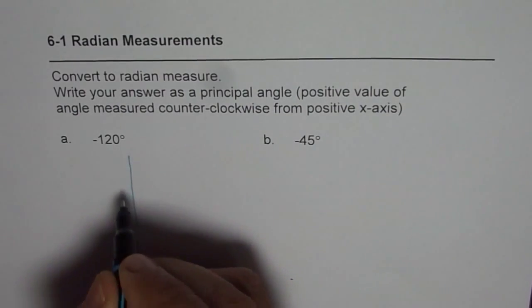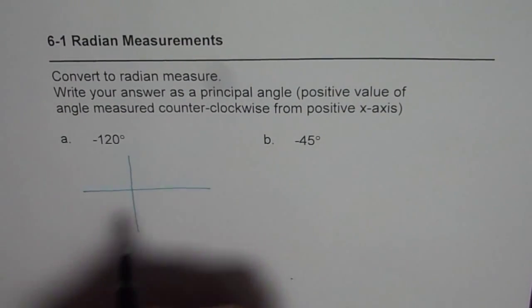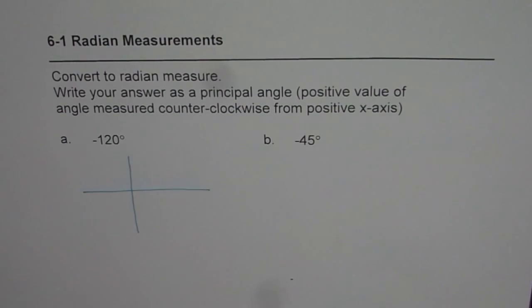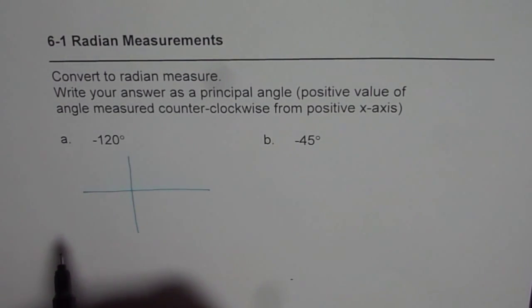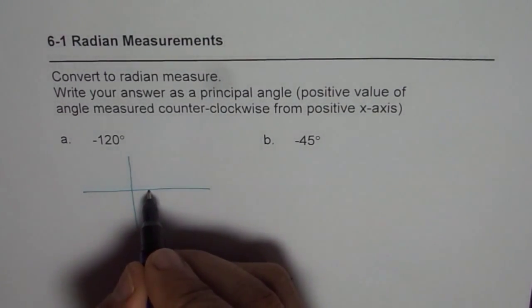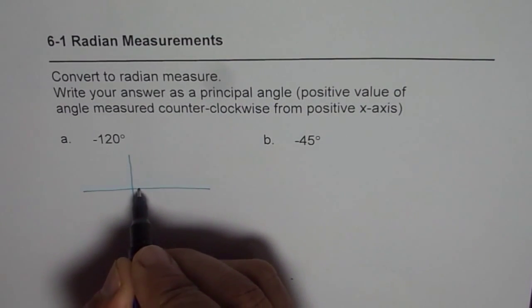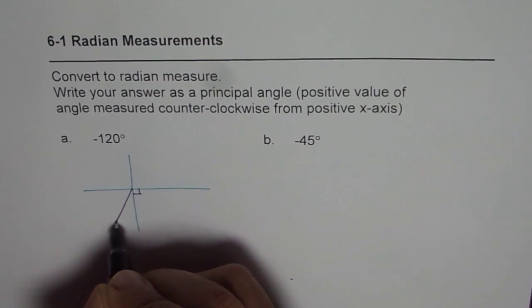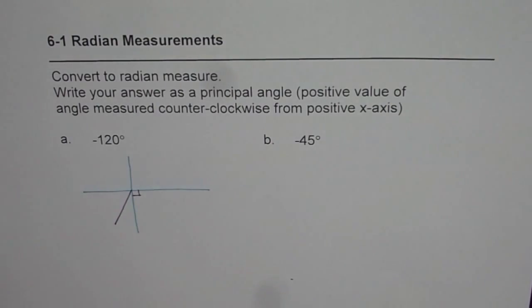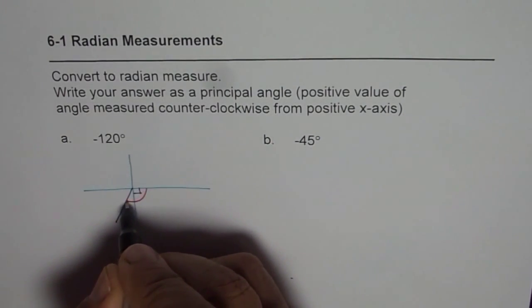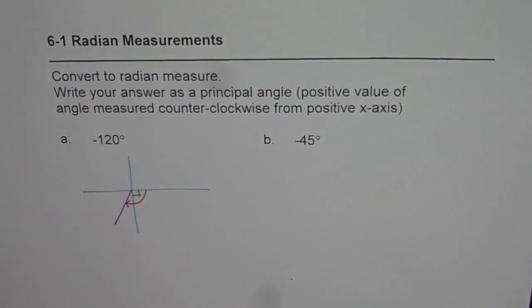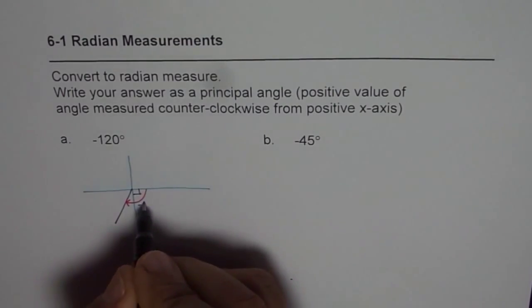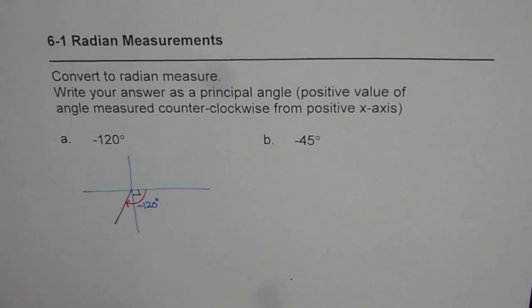The first example is converting minus 120 degrees to radians. When we say minus 120 degrees, it means we move clockwise. We know 90 degrees is here, so 30 more gives us minus 120 degrees. This angle puts us in quadrant 3, and that is the angle we are talking about.